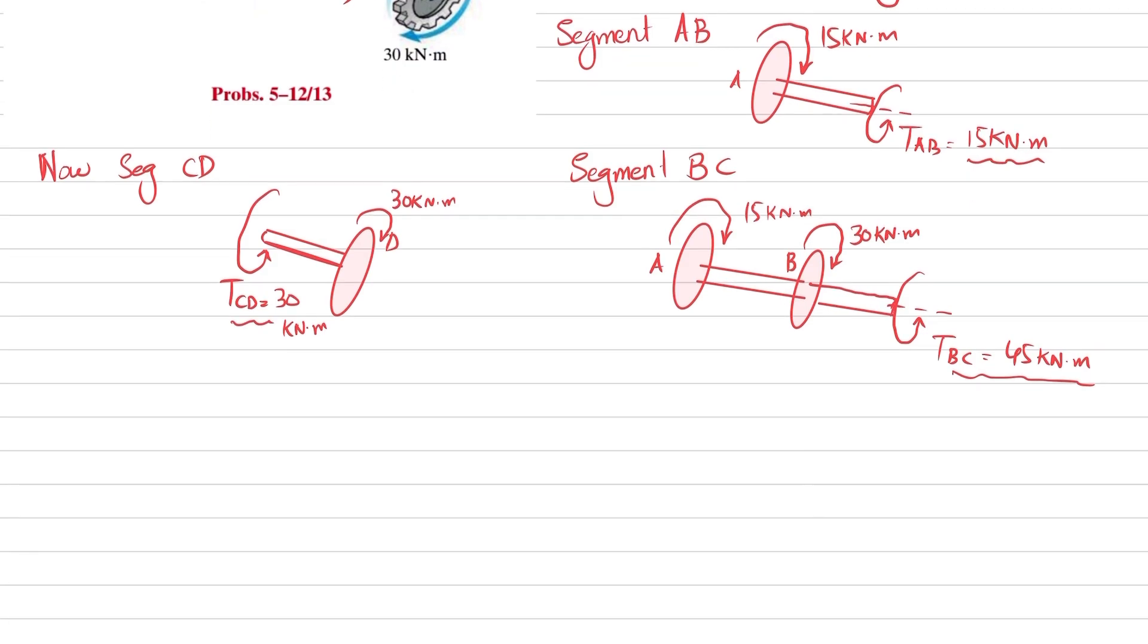So you can see that segment BC is critical. Why? Because the maximum torque applied is 45 kilonewtons. Segment BC is critical since it is subjected to greatest internal torque.